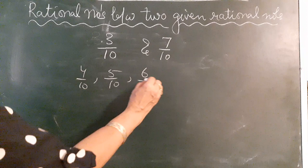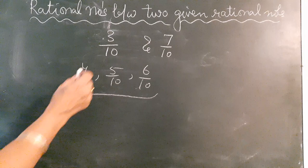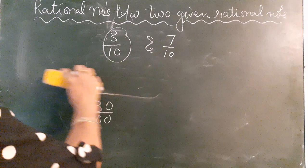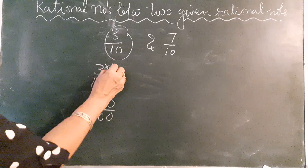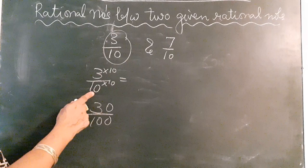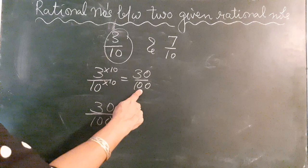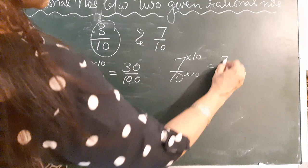But you can also write 3/10 as 30/100, because these two are equivalent. When you multiply the numerator and denominator of any rational number by the same number, you get an equivalent fraction. So 3/10 and 30/100 are equivalent, and similarly 7/10 and 70/100 are equivalent.